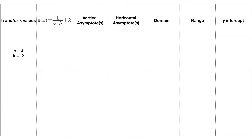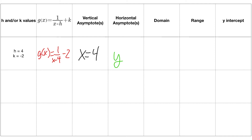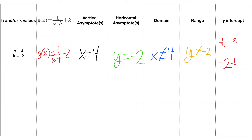Now we'll fill out a table given h and k values. For h equals 4 and k equals negative 2: g of x equals 1 over x minus 4, minus 2. The vertical asymptote is x equals 4. The horizontal asymptote is y equals negative 2. Domain is x does not equal 4. Range is y does not equal negative 2. For the y-intercept, plug in 0: 1 over negative 4 minus 2 equals negative 2 and one-fourth.